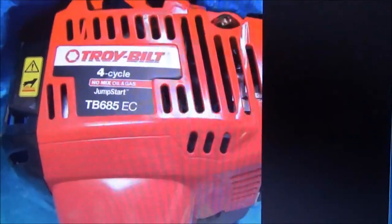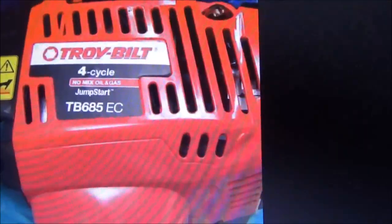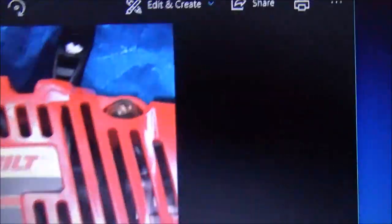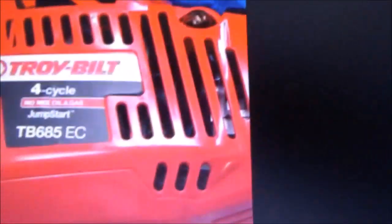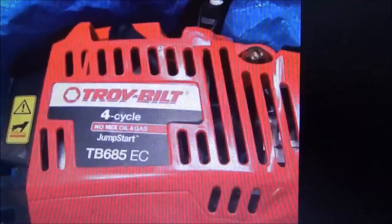Hey guys, if you have a weed eater like this, the Troy Built TB685EC with JumpStart and you have to change the primer bulb or the gas lines, I'm going to explain how. Stick around, we'll be right back.